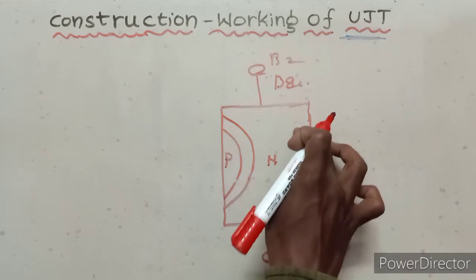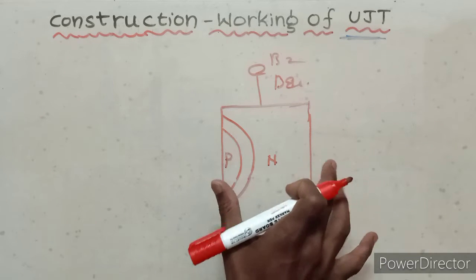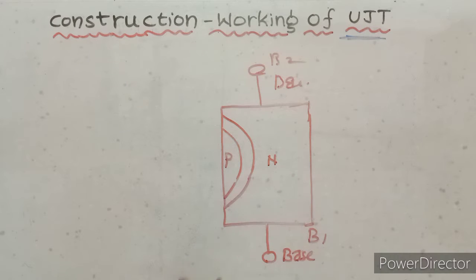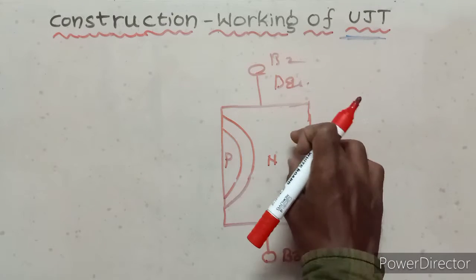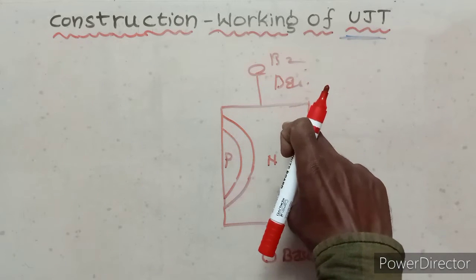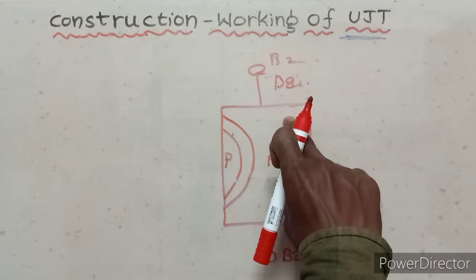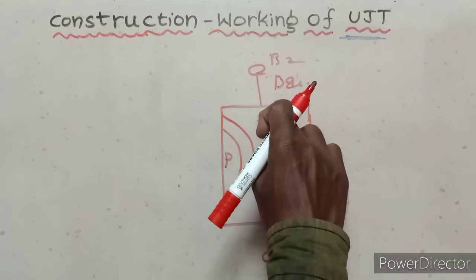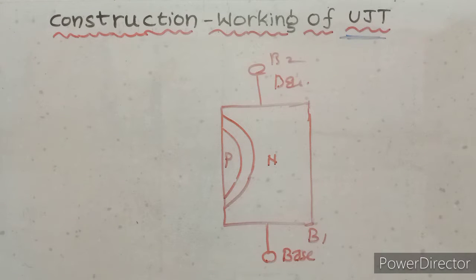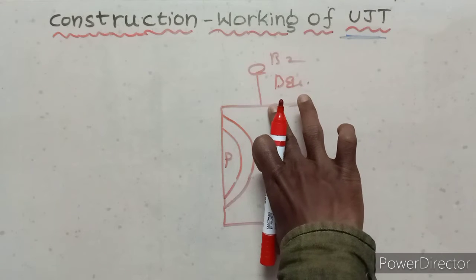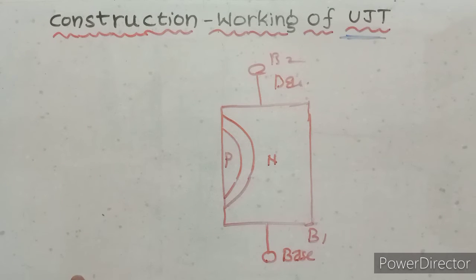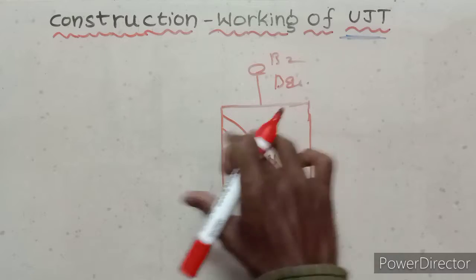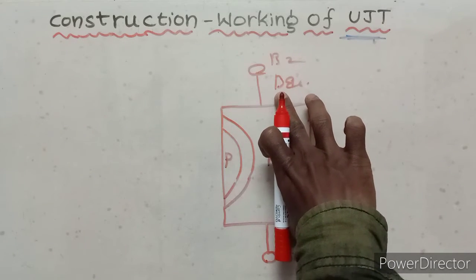In the construction of UJT, an n-type semiconductor silicon bar is used as the base element. This silicon bar has two bases, B1 and B2. Two ohmic contacts are made at base one and base two on opposite sides of the n-type semiconductor. These B1 and B2 contacts have resistances of approximately 5k ohms and 10k ohms respectively.